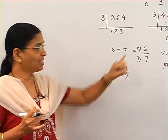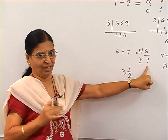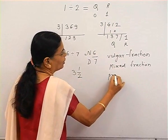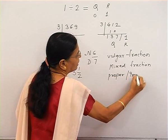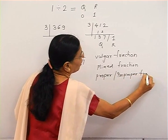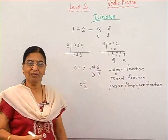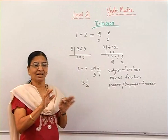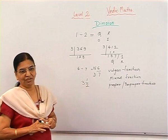A proper fraction is when the numerator is less than the denominator, and there is also an improper fraction. So we know two more terms — the proper and improper fraction. These are important for the study of fractions, but at this Vedic maths level we are studying the division.